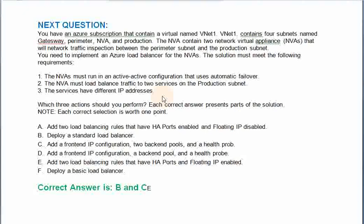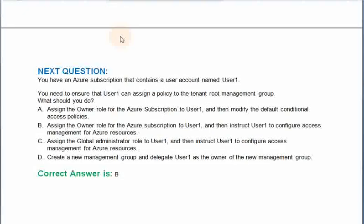Which three actions should you perform? Option A: Add two load balancing rules that have HA ports enabled and floating IP disabled. Option B: Deploy the standard load balancer. Option C: Add a front-end IP configuration, two back-end pools, and a health probe. Option D: Add two load balancing rules that have HA ports and floating IP enabled. Option F: Deploy a basic load balancer. The correct answer is Option B and C.